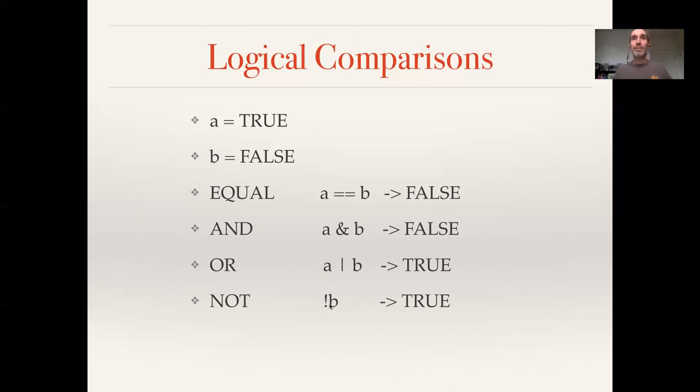And so there's an additional operation that combines not and equal that asks, instead of asking whether A and B are equal, we can ask whether A and B are not equal. So since A is true and B is false, it's true that these things are not equal.